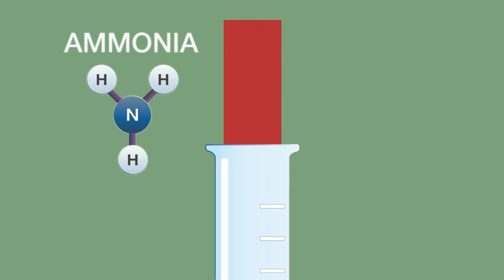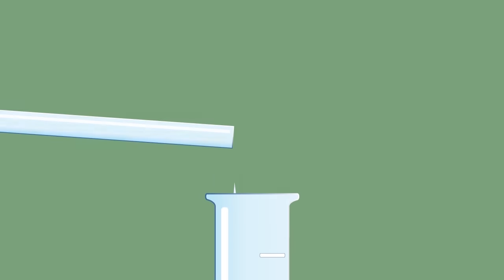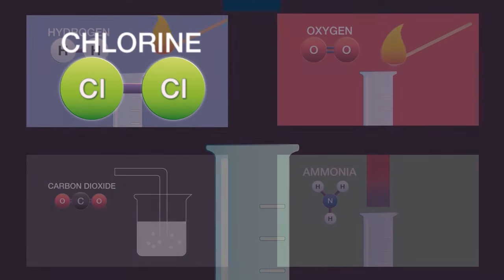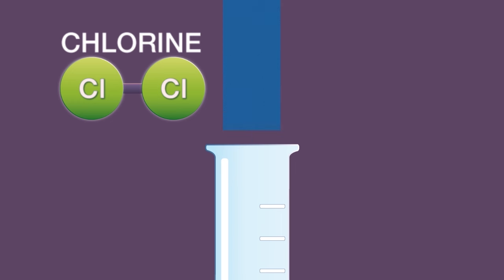Ammonia turns damp red litmus paper blue and forms a white smoke of ammonium chloride in the presence of concentrated hydrochloric acid. Chlorine turns damp blue litmus paper red and continues to bleach it to white.